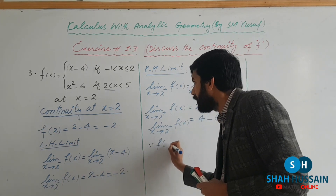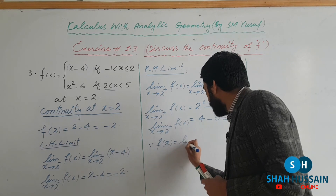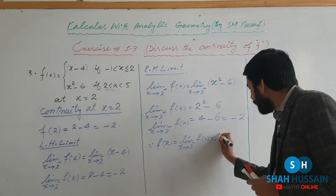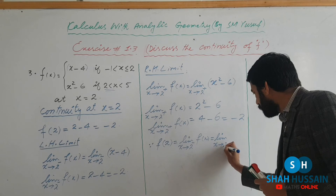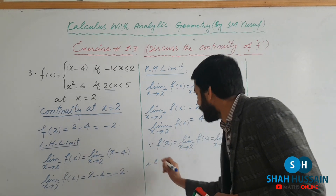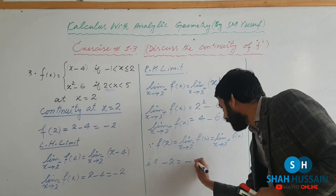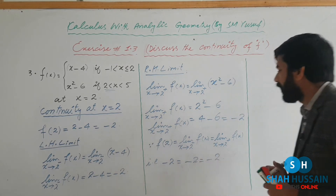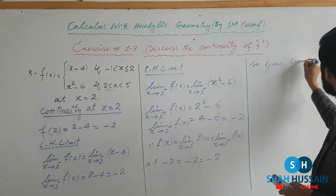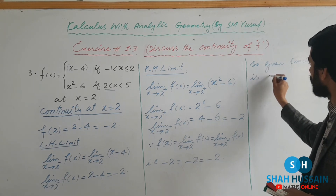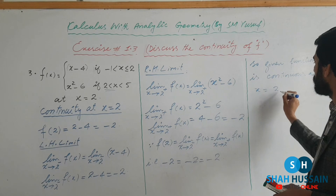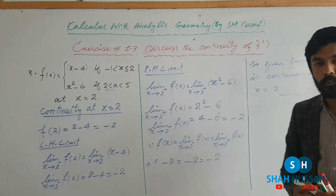Notice that f(2) = -2, left hand limit = -2, and right hand limit = -2. Since the function value equals both the left and right hand limits, we can say the given function is continuous at x = 2.